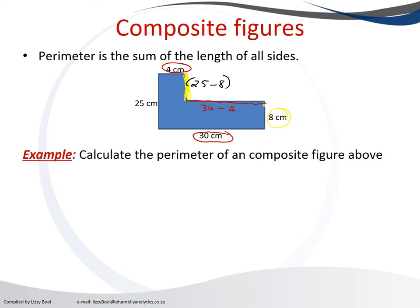Calculate the perimeter of the composite figure above, which is the one that we just did. Remember, the perimeter, we're adding all sides. So we're going to add 4 plus 25 plus 30 plus 8 plus (30 minus 4) plus (25 minus 8) because we're adding all the sides.